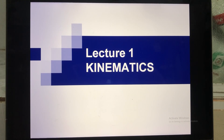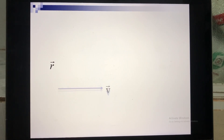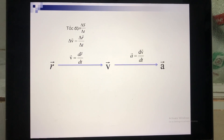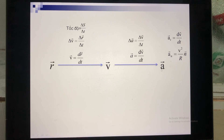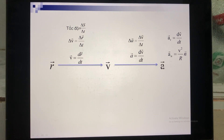Continuing the lecture on kinematics, today I will talk about straight motion. Let me remind you about the position vector, velocity, and acceleration. When you want to analyze the types of motion, you base your analysis on these three quantities. From R to V to A, you go in one direction; now you go in the opposite direction to find the expressions.